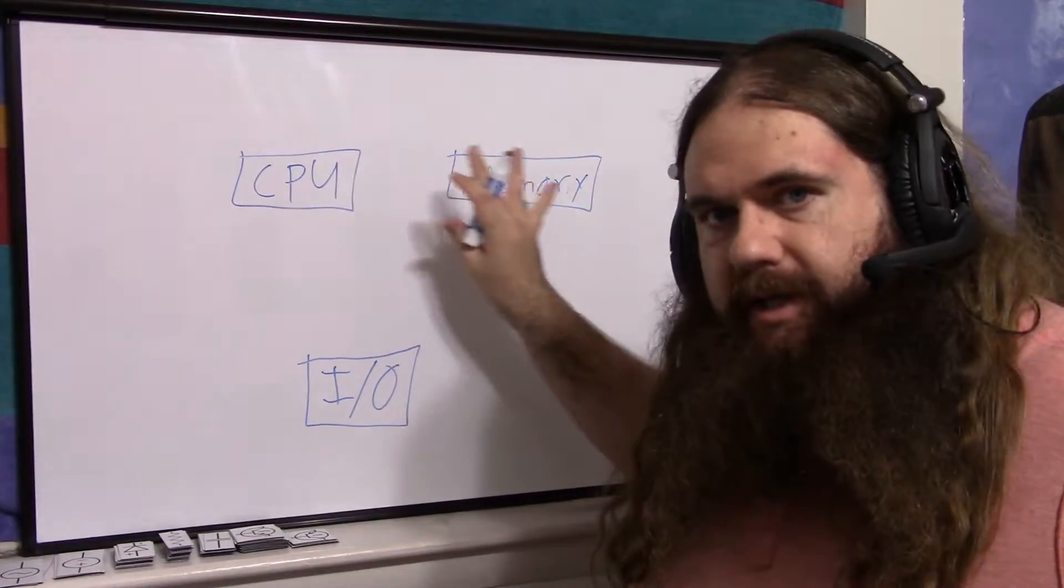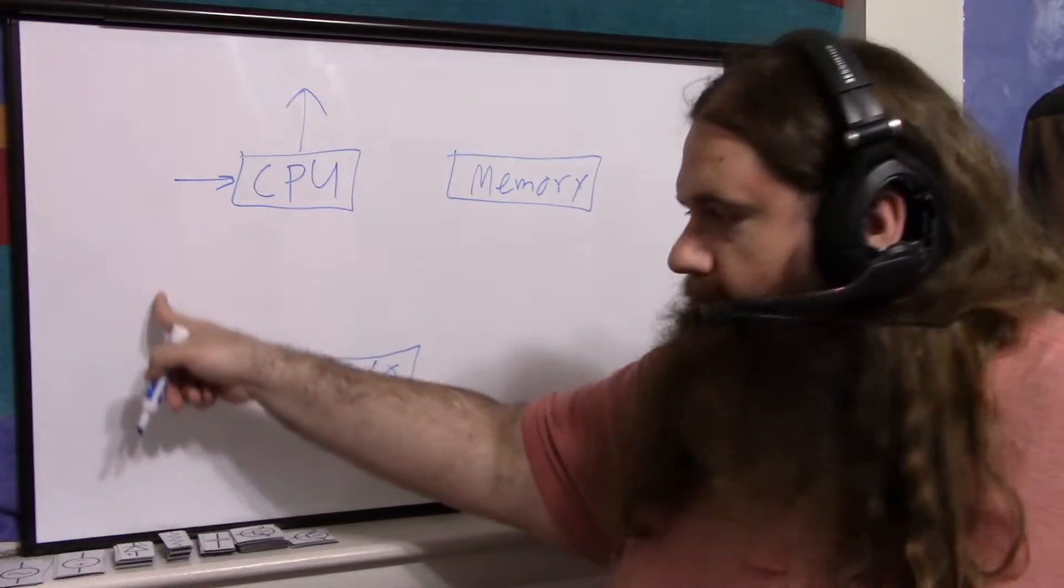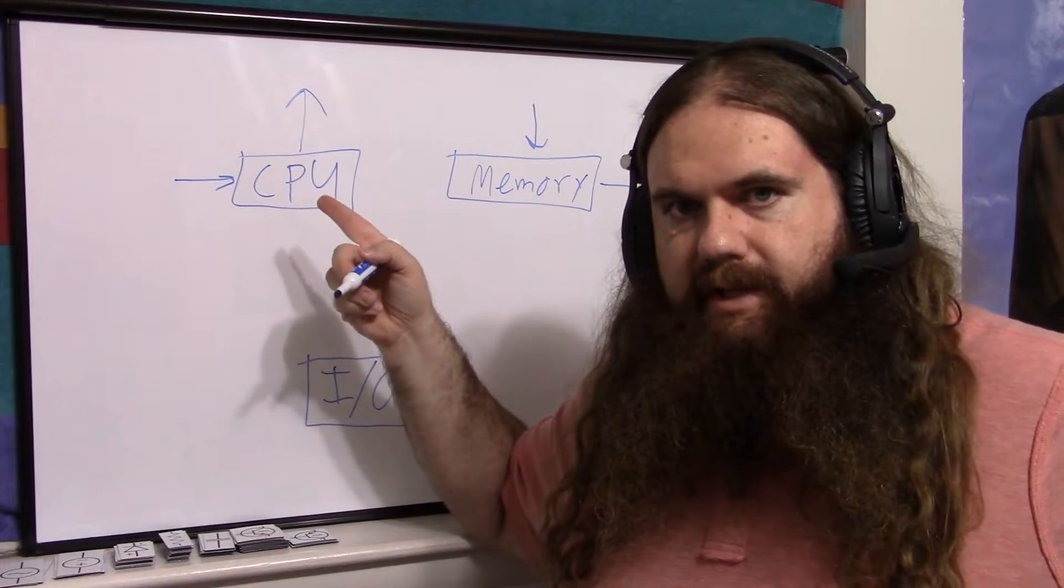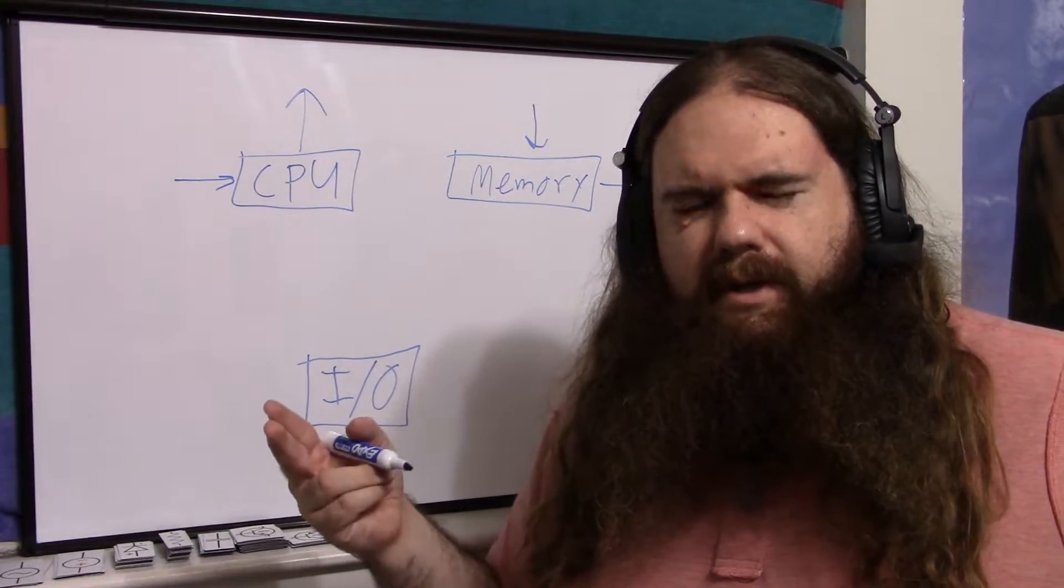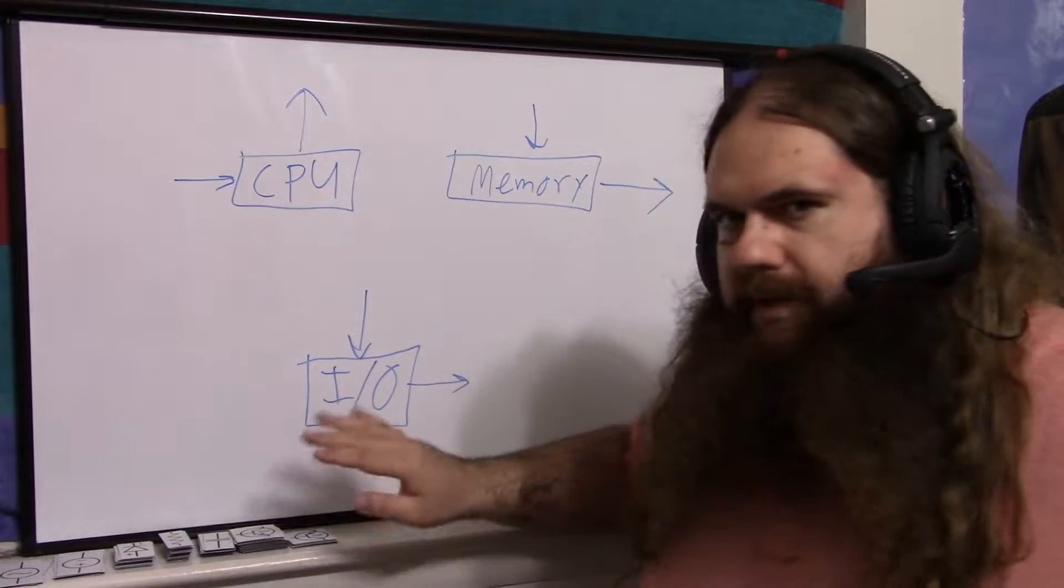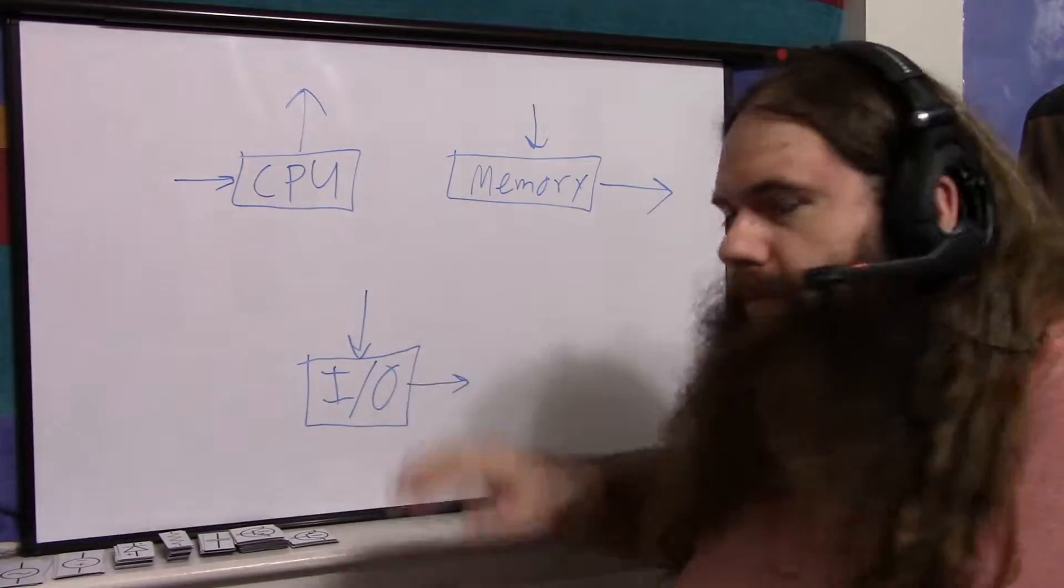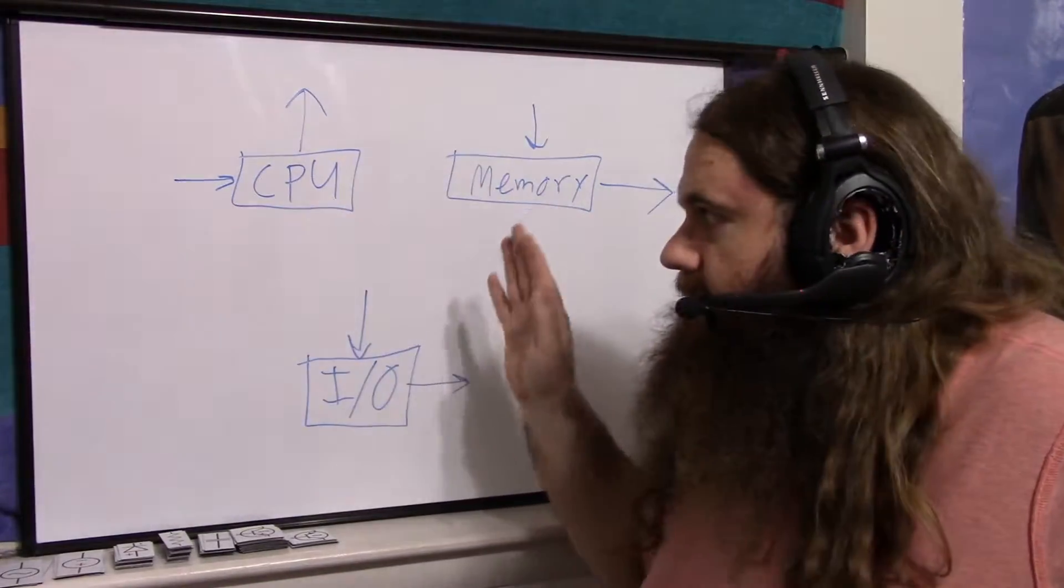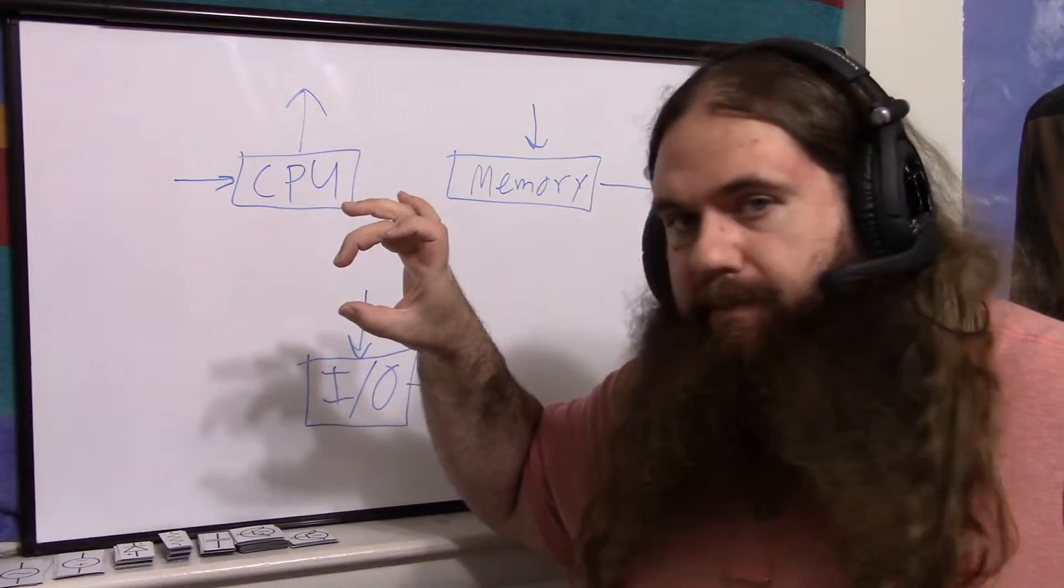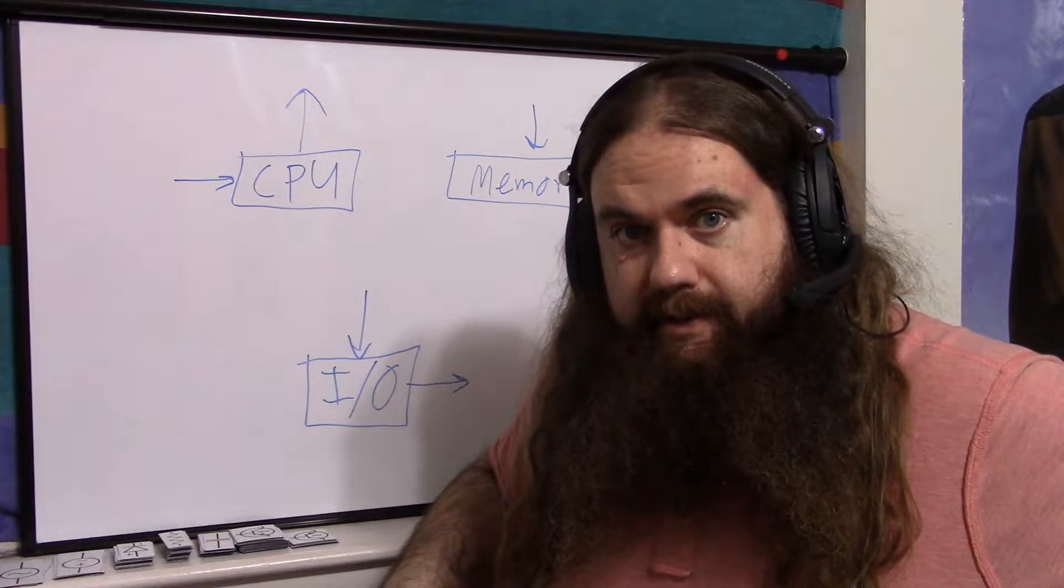Basically, each of these is going to be transistor logic. Your CPU is going to have inputs and outputs from I/O or from memory. Each of these things can just be thought of as a mass of transistors, and a lot of them. Think about how big a nice Intel or AMD CPU is. Their transistors are only nanometers in size. That's a lot of transistors.